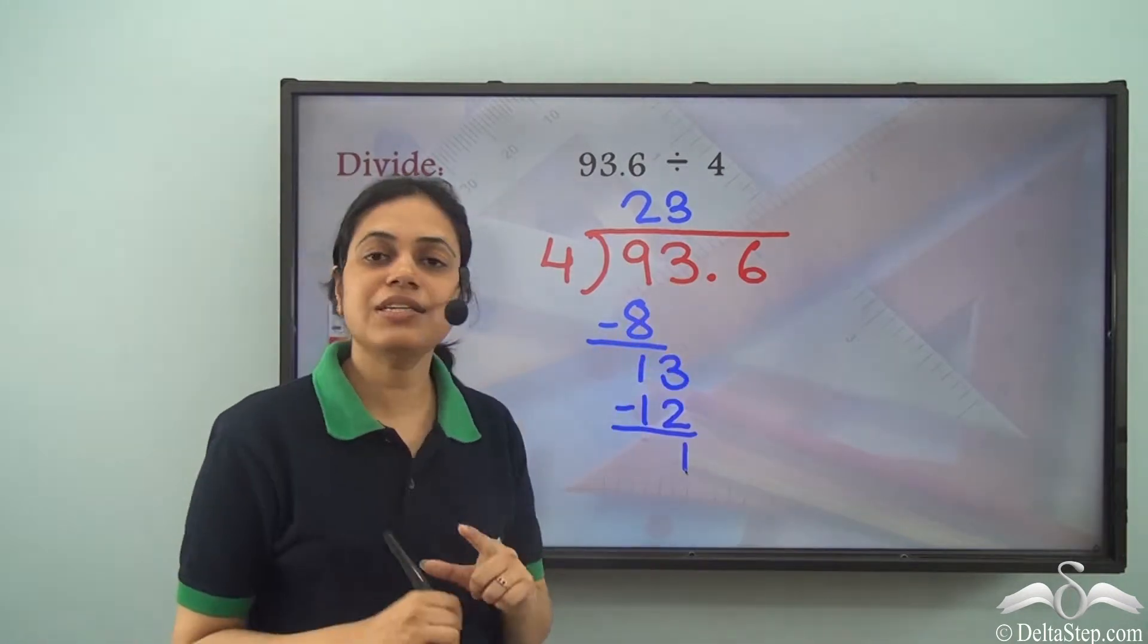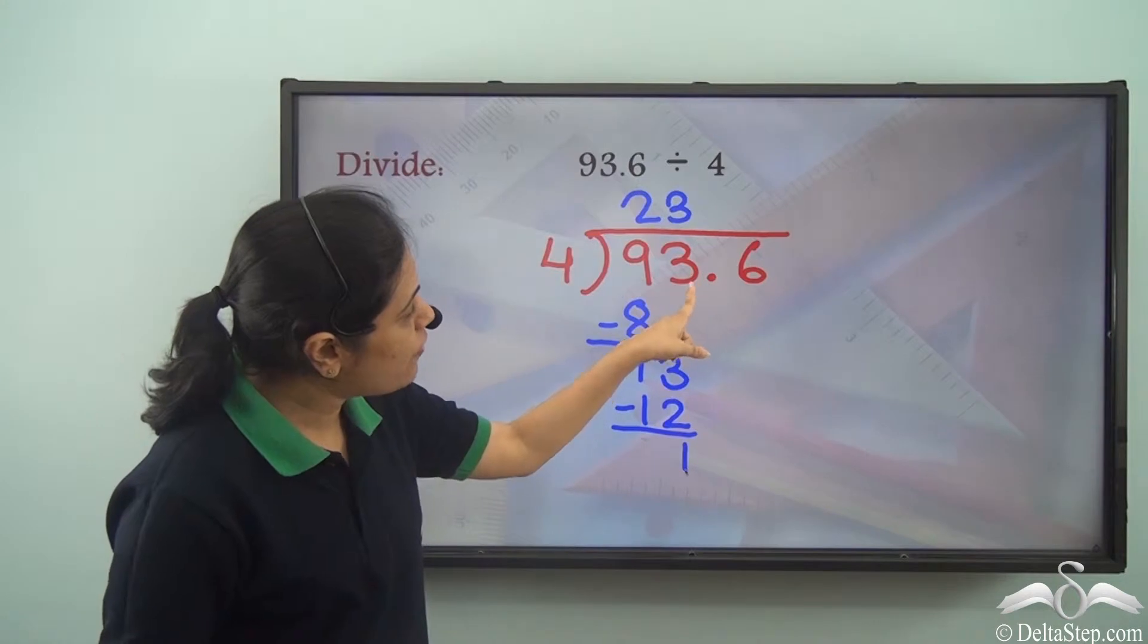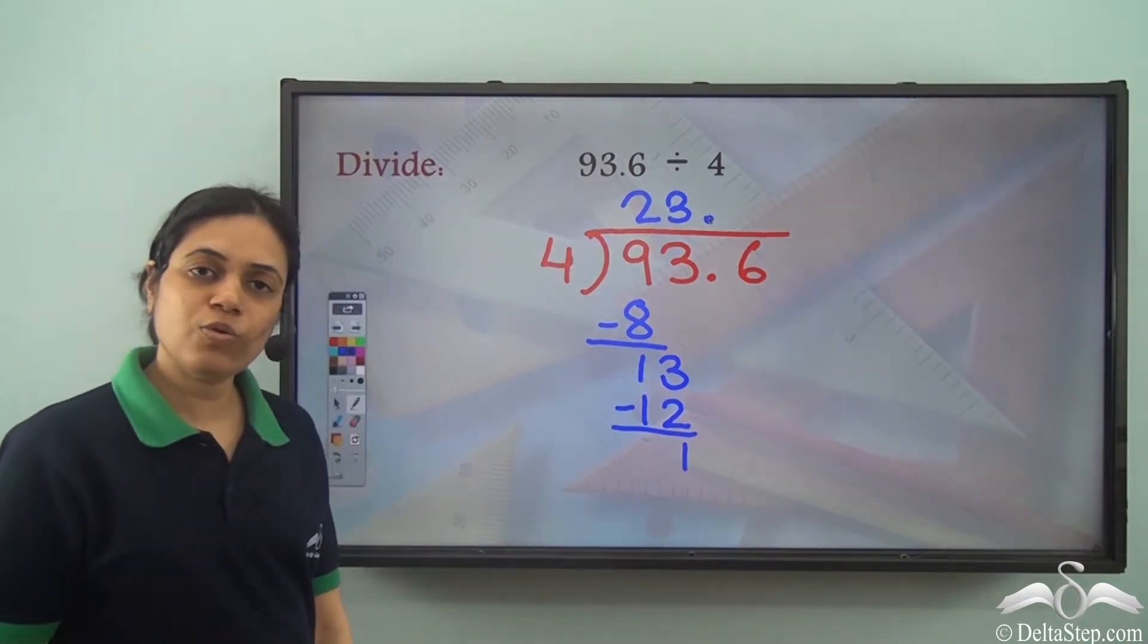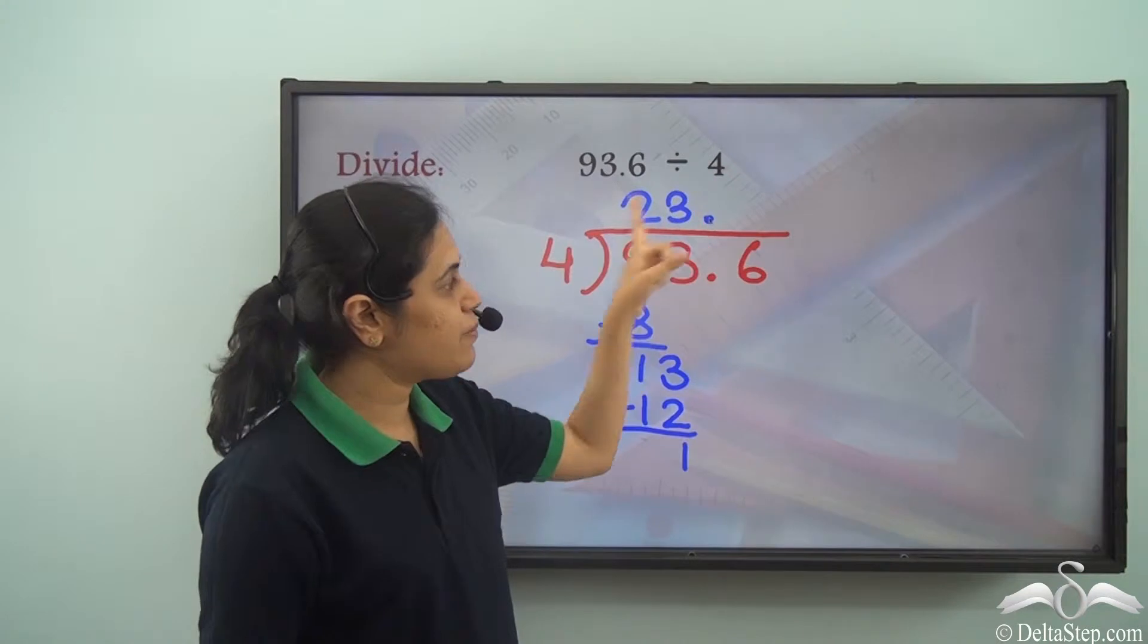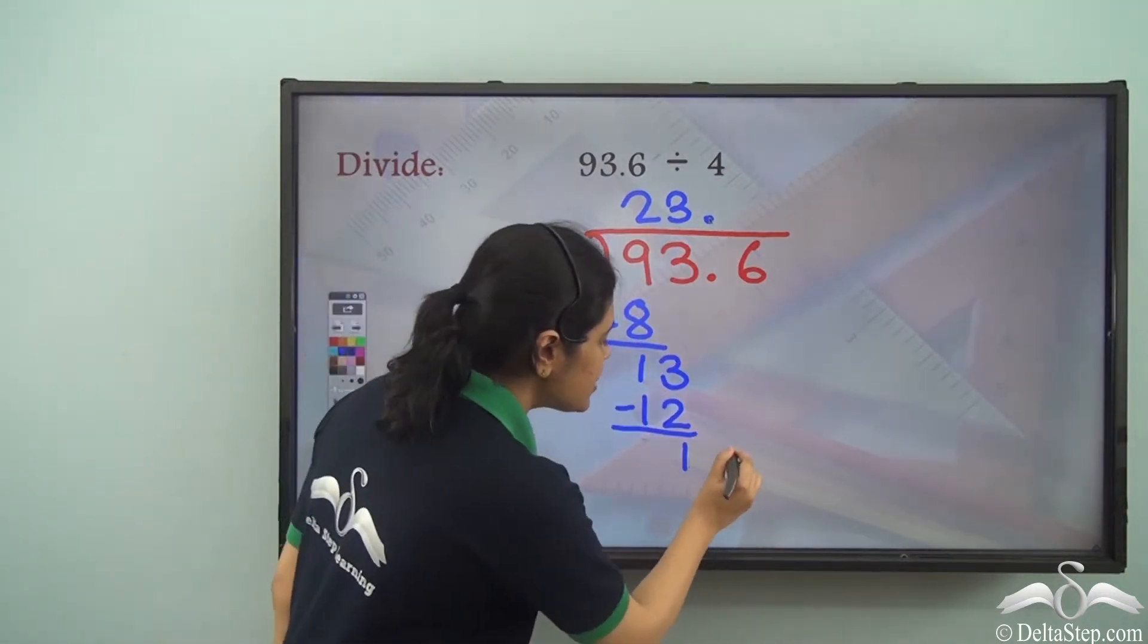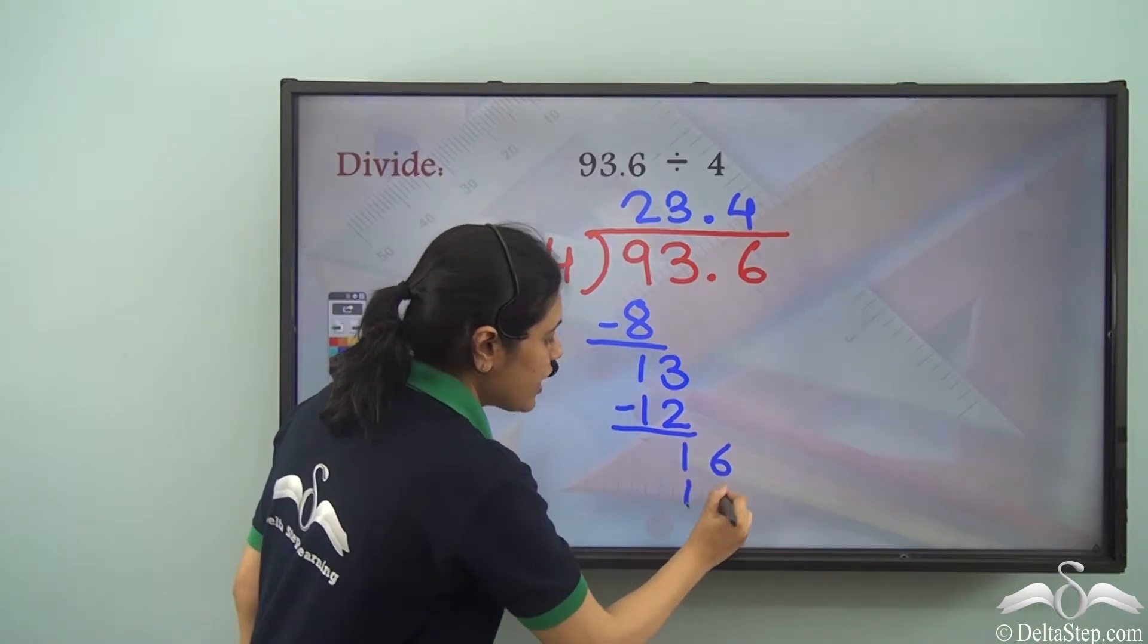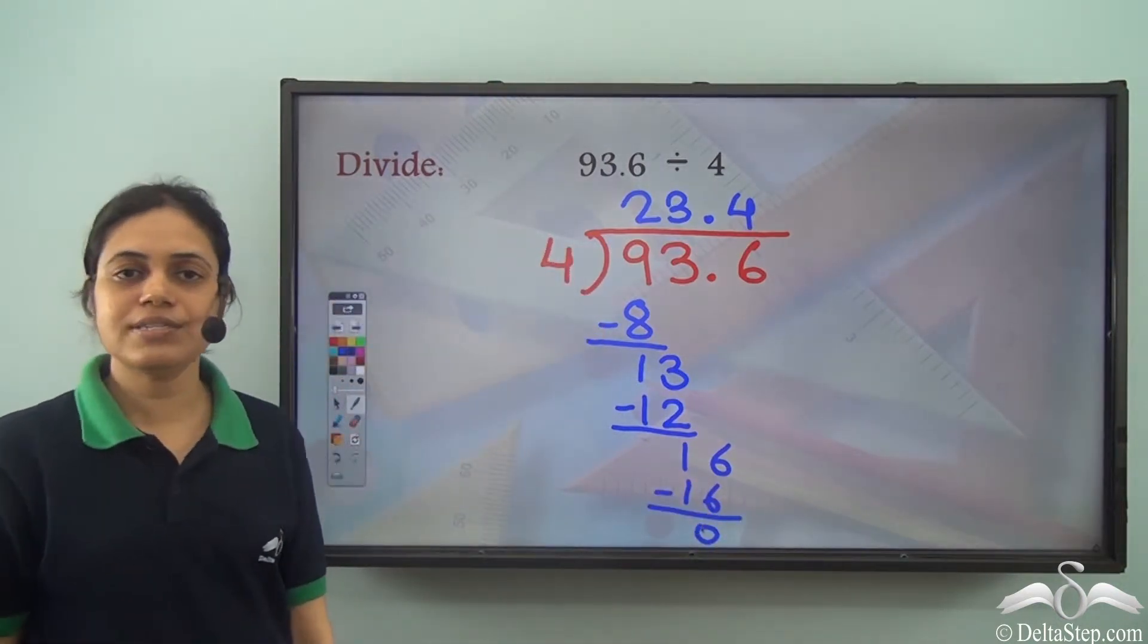Now after 3 there is a decimal point. So what do I do about it? When we have a decimal point in the dividend, I put a decimal point in the quotient as well. So for this decimal point in the dividend, I put a decimal point in the quotient and now I bring down this 6. So I get 16. 4 goes into 16 four times. So 4 into 4 is 16 and the remainder is 0.